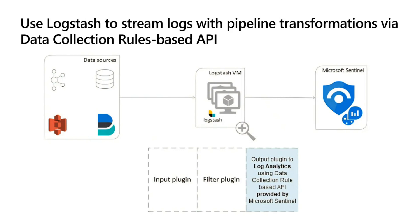For example, you could say: I've pulled this data from a database source, and I want to see whether the login attempted on this database originated from an IP address on our watch list. Logstash can allow you to do some of that type of enrichment, although it may be faster to do it in Sentinel.